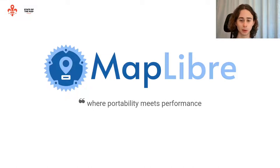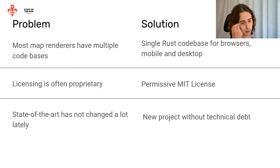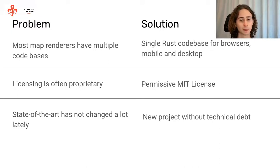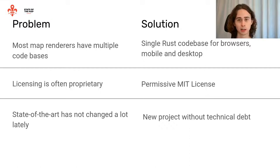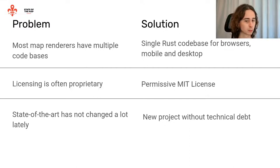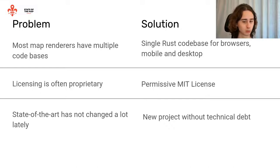Now I want to present MapLibre RS. I identified a few problems that are present today which MapLibre RS proposes solutions to. Most map renderers have multiple code bases — typically one for the web in JavaScript or TypeScript, and a C/C++ code base targeting mobile. With MapLibre RS, we have a single code base for browsers, mobile, and desktop. Licensing can also be difficult with map renderers, and MapLibre RS aims to be a true free and open source solution with a permissive MIT license.